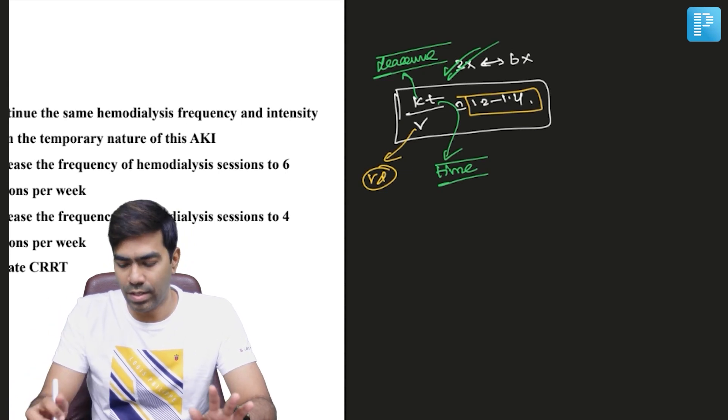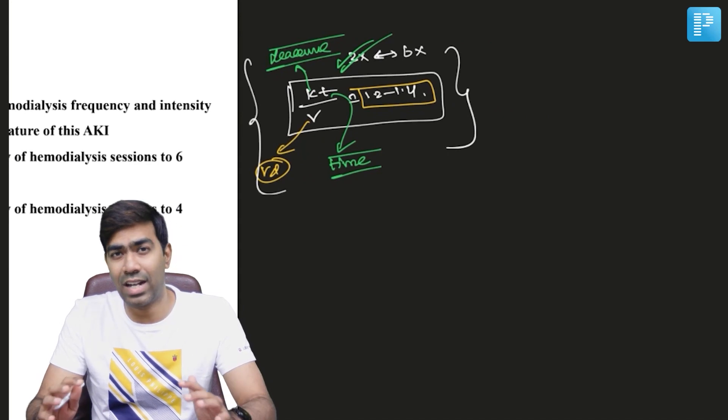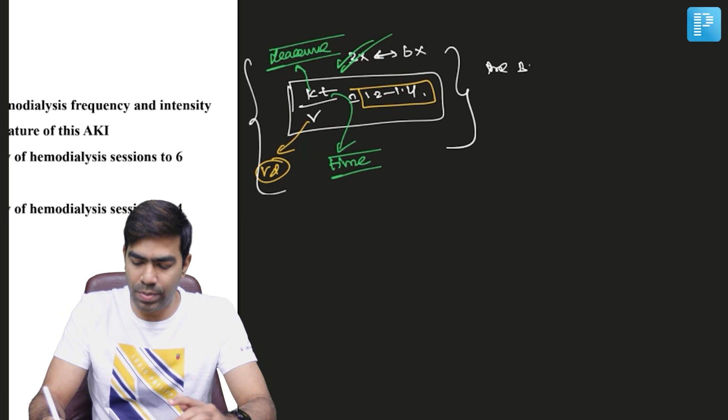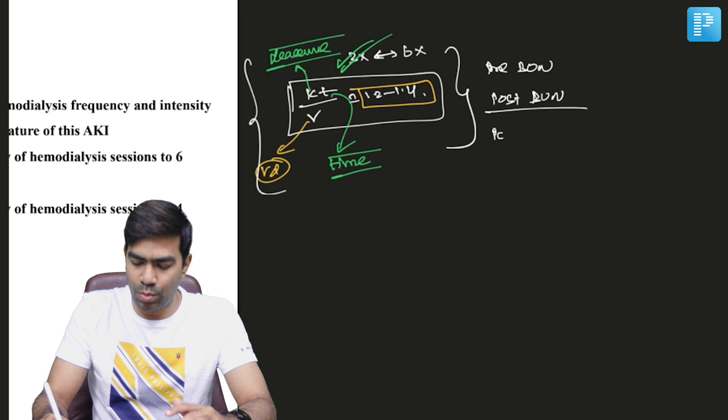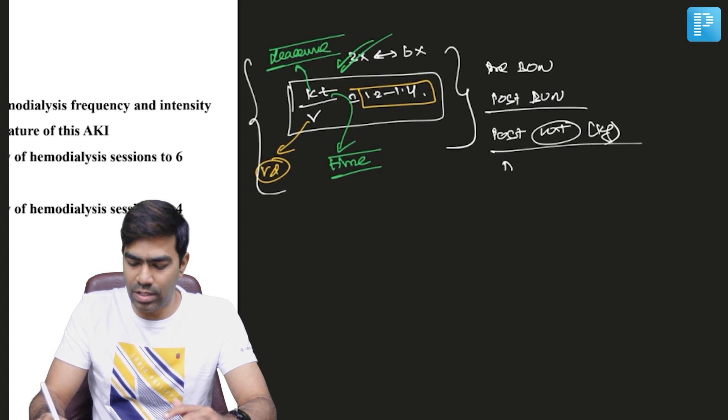To calculate KT/V for urea, we have many online calculators. What data do you need? You need to know the pre-dialysis BUN and post-dialysis BUN, the post-dialysis body weight in kilograms called the dry weight, the duration of dialysis, and the total ultrafiltrate rate or net fluid removal rate.